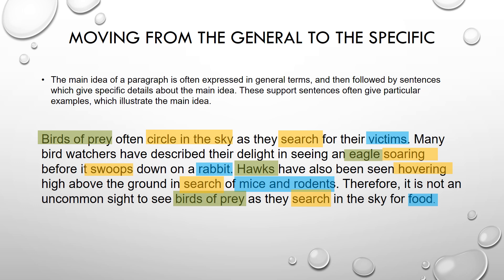The following paragraph is an illustration of how a paragraph moves from the general to the specific. Birds of prey often circle in the sky as they search for their victims. Many birdwatchers have described their delight in seeing an eagle soaring before it swoops down on a rabbit. Hawks have also been seen hovering high above the ground in search of mice and rodents. Therefore, it is not an uncommon sight to see birds of prey as they search in the sky for food.